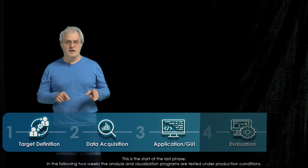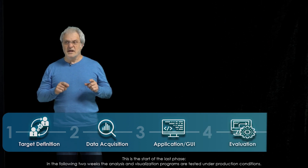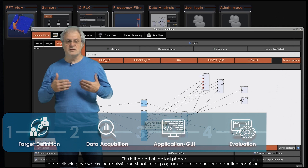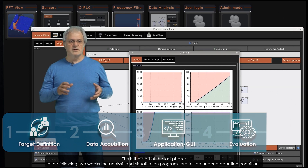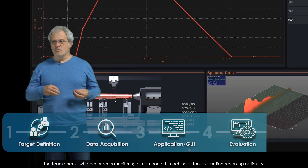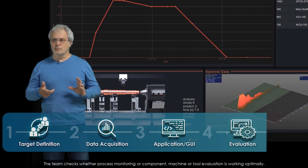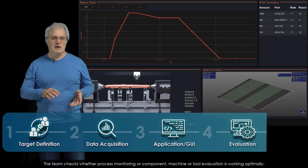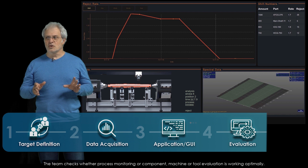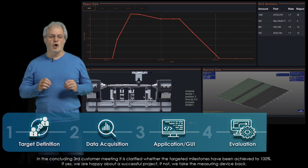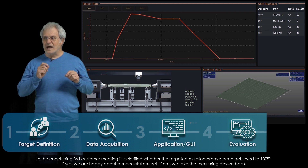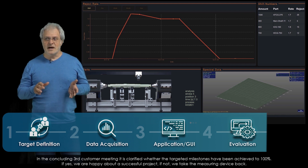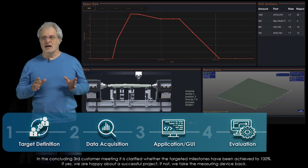This is the start of the last phase. In the following two weeks the analysis and visualization programs are tested under production conditions. The team checks whether the process monitoring or component, machine or tool evaluation is working optimally. In the concluding third customer meeting it is clarified whether the targeted milestones have been achieved to 100%.